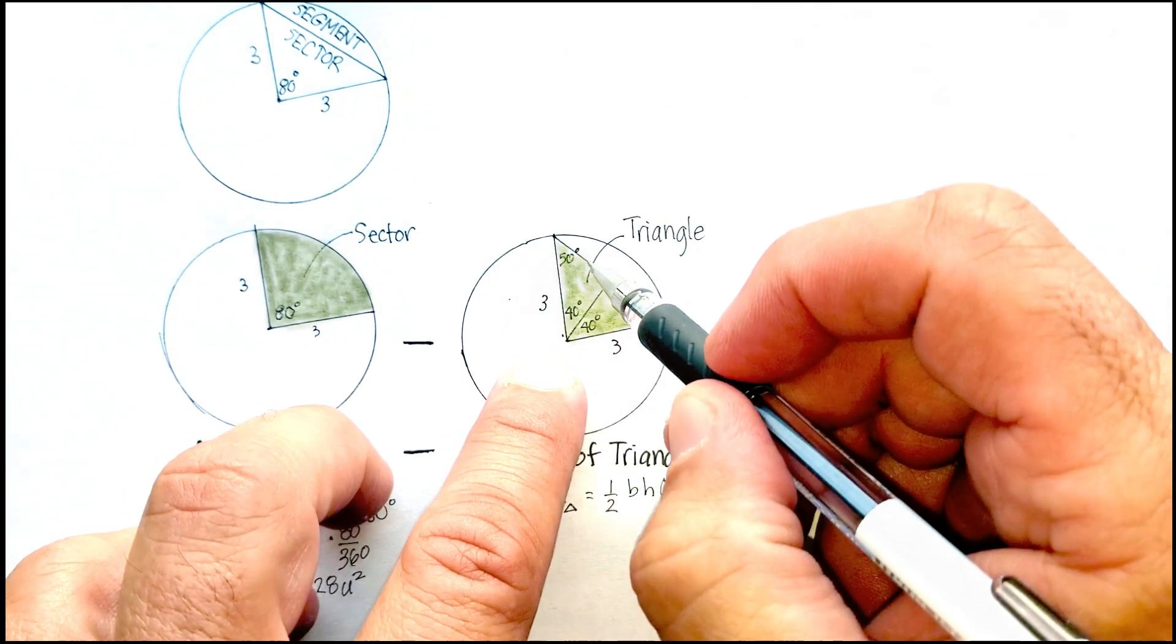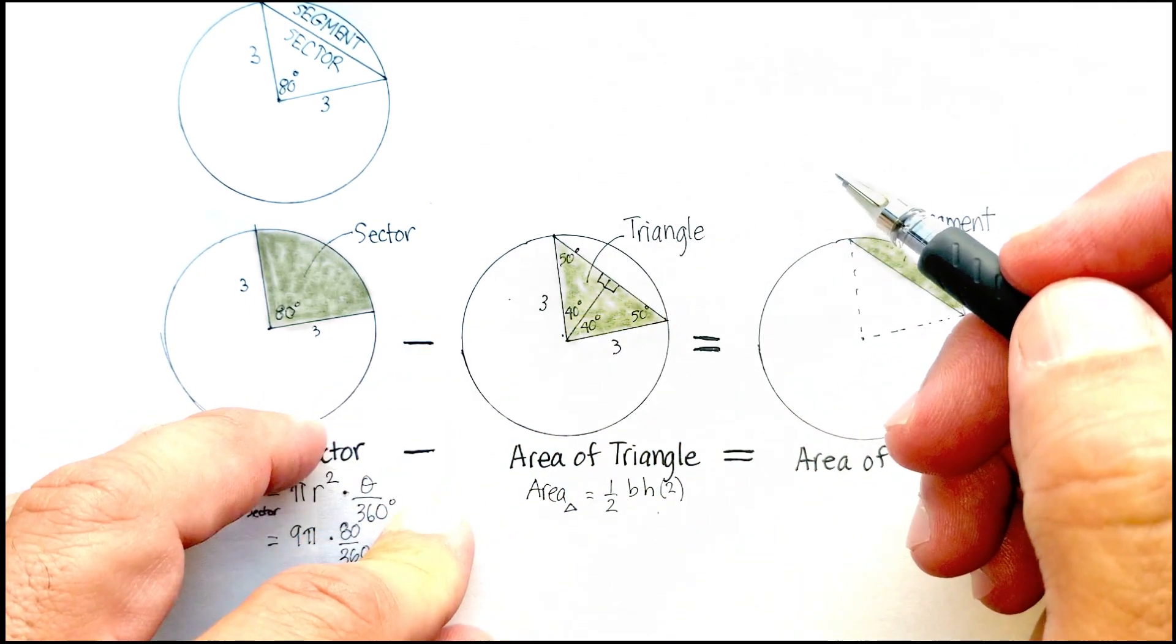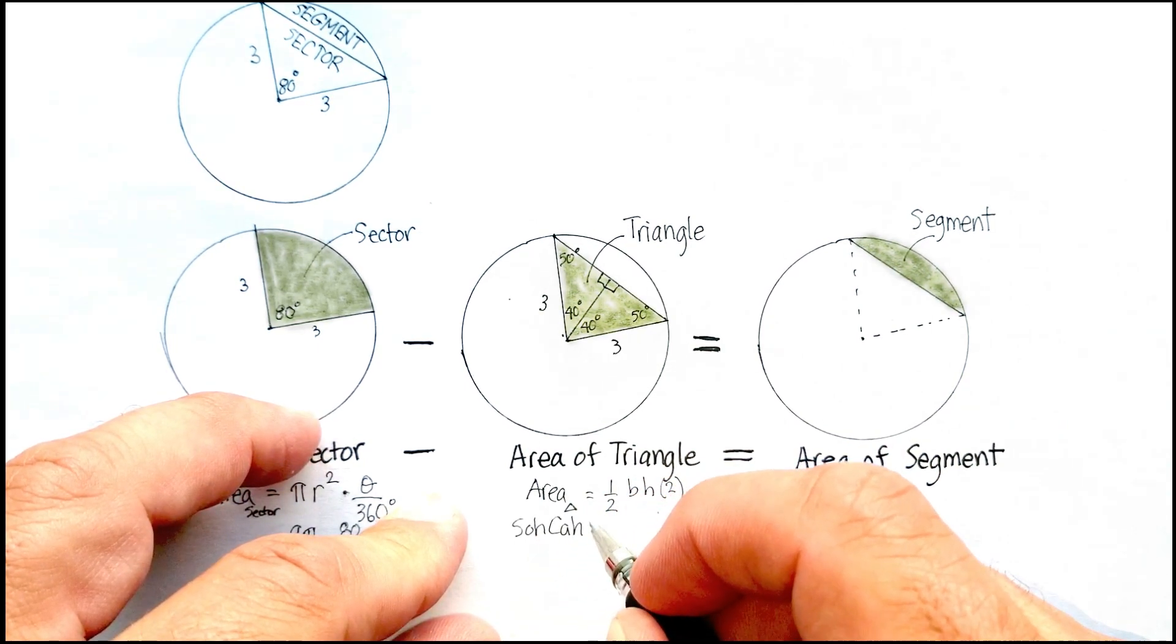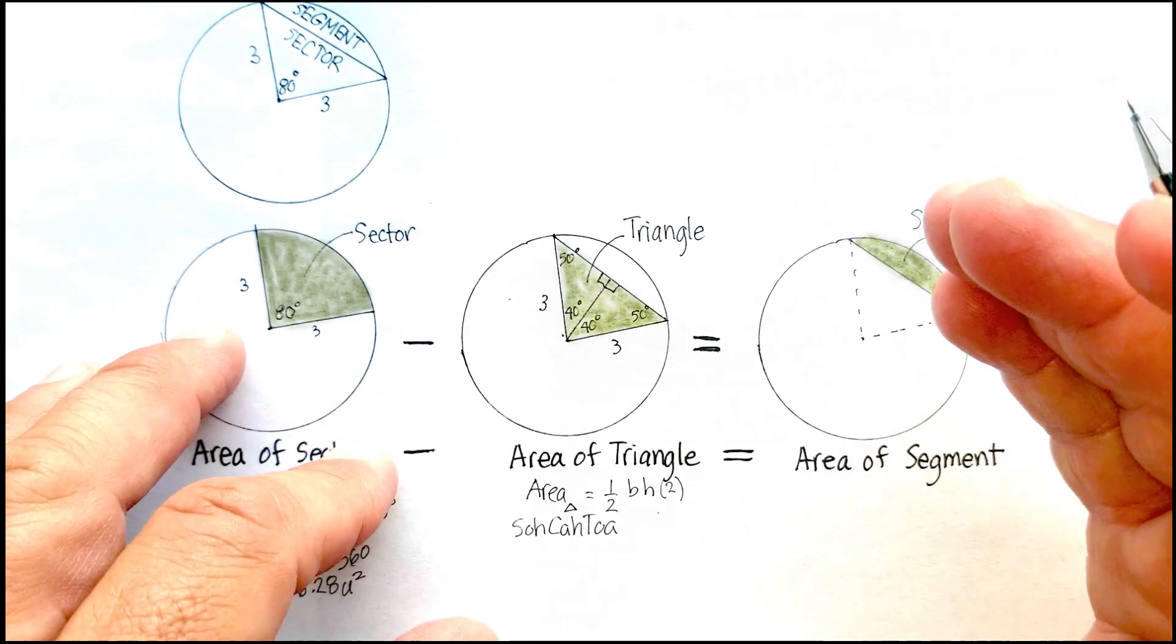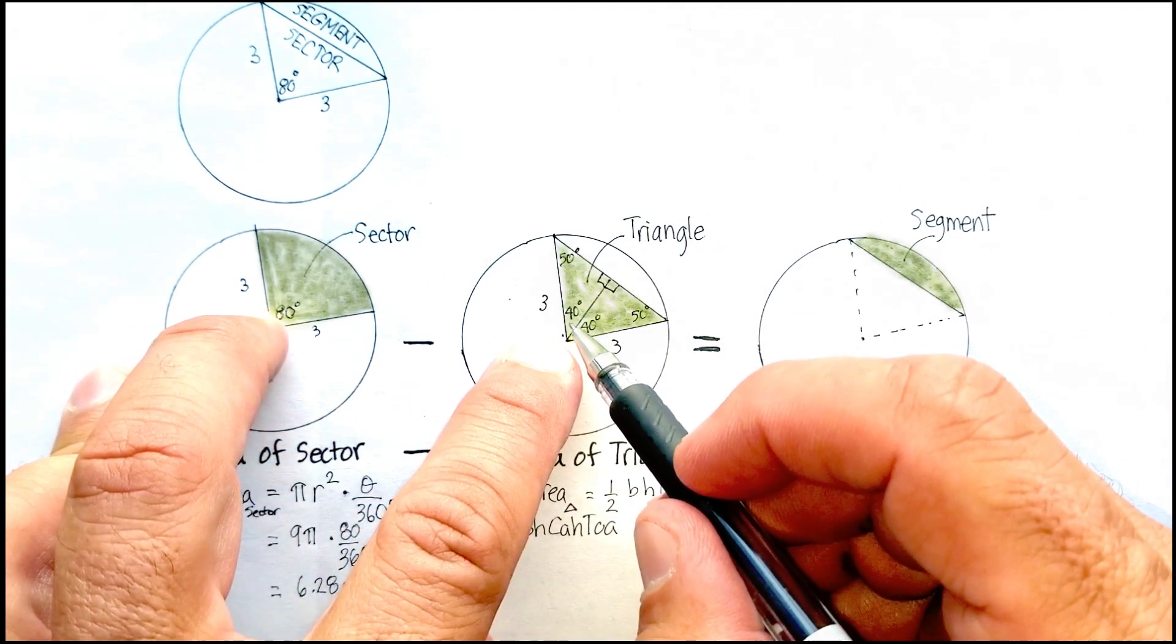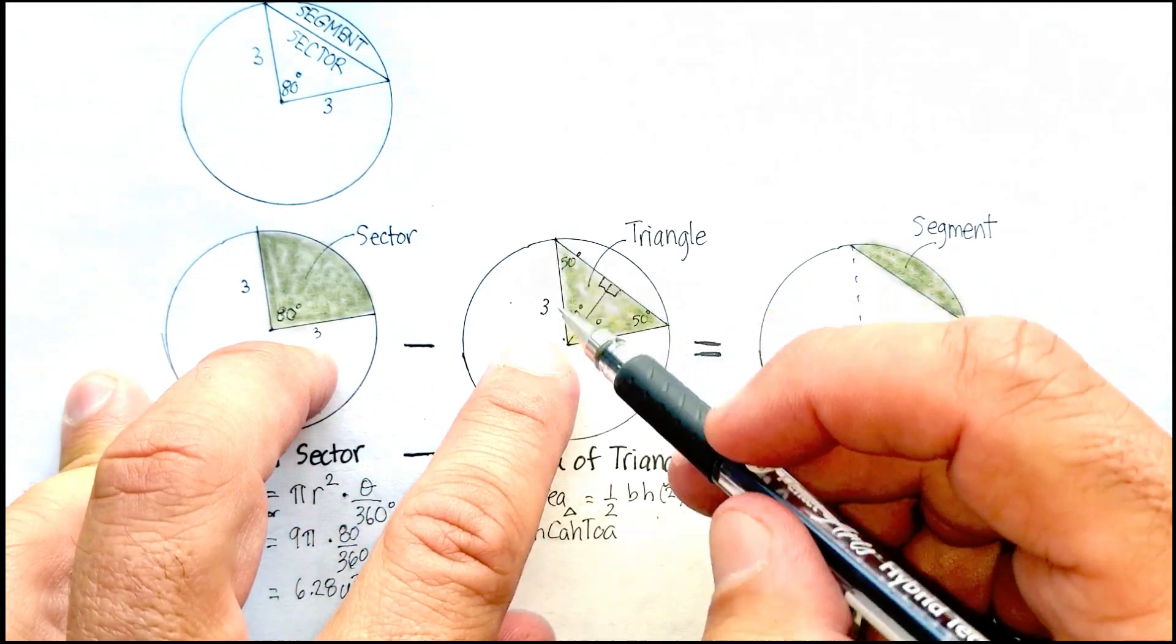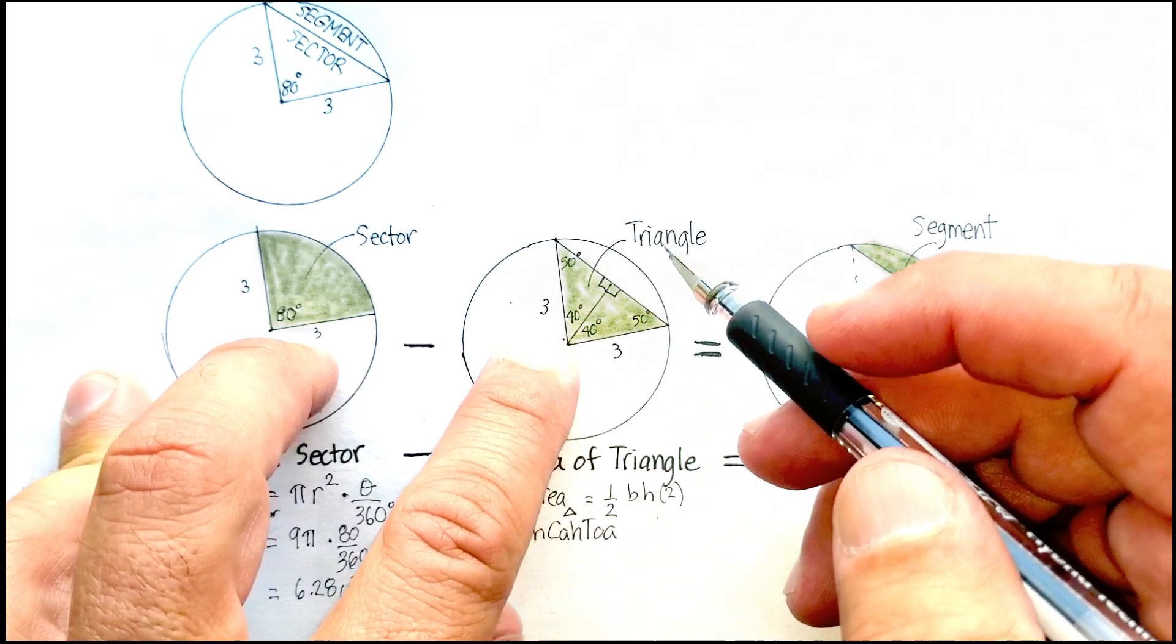Now, how do we find the length of each of these sides? And this is where we have to use our trig knowledge. Remember, SOHCAHTOA will tell us what our formulas are. Here, if we know the sine of 40 degrees, we're going to say opposite over the hypotenuse. Here's the hypotenuse. The opposite will be this side here.